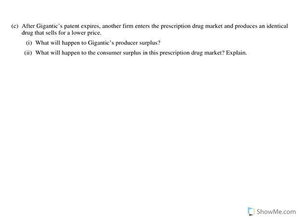Letter C says that after Gigantic's patent expires, another firm enters the prescription drug market and produces an identical drug that sells for a lower price. For C1, what's going to happen to Gigantic's producer surplus? The answer is it's going to decrease. Producer surplus is the difference between what I actually get from my product and what I'm willing to accept. The price of the product has decreased, which means I'm not going to get as much producer surplus as before because that difference is smaller.